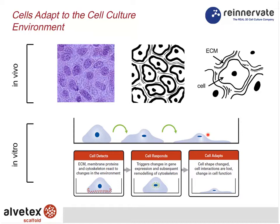Looking at this first slide, we see the in vivo situation across the top — a histological image of real tissue in the body. A cell resides with other cells and the extracellular matrix in a complex three-dimensional system. But in vitro, we disrupt these relationships; cells come into contact with a flat, planar, two-dimensional substrate, most often made of polystyrene or glass. When cells contact that flat surface, they change their shape and modify their structural phenotype, and inside the cell there is remodelling of organelles, cytoskeleton, and other major components.